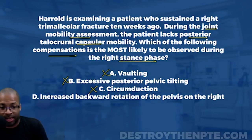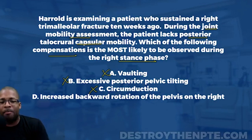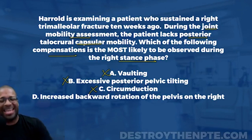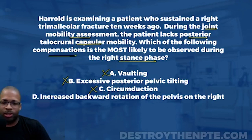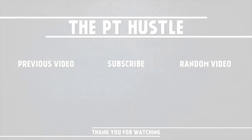Our final answer is D — increased backward rotation of the pelvis on the right. This one sent a lot of you for a loop, and I get it. But I have to ask you the tough questions to over-prepare you for the actual NPTE, so you go in there and dominate it.